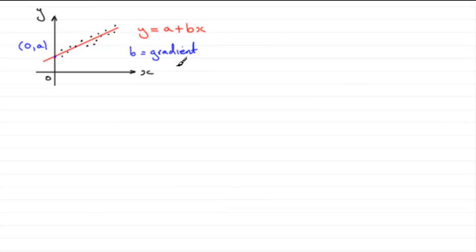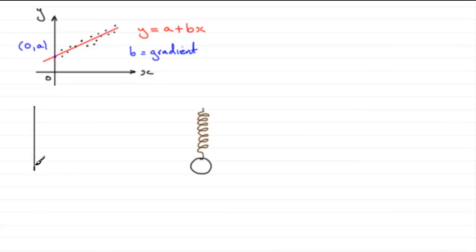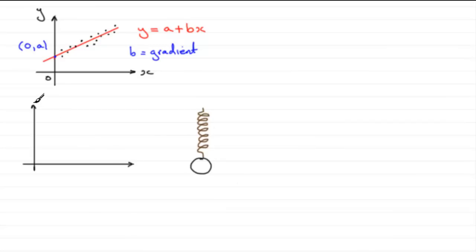To demonstrate this, suppose we have a spring with a mass attached to the end. The more mass we put on, the longer the spring gets. If we draw up a set of axes and record how much it stretches against the mass placed on the end, we face a question: which variable goes on which axis? This raises an important point about how to label our axes correctly.